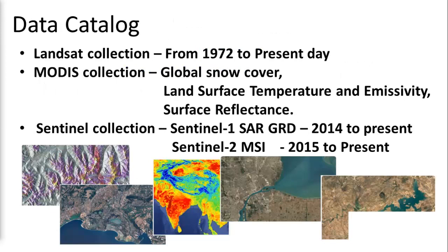As you can see, the data catalog of Google Earth Engine has a variety of collections. The Landsat collection has images from 1972 to the present day, including Landsat 1 through Landsat 8. In the MODIS collection, you can get many image types for calculating or analyzing global snow cover, land surface temperature, and surface reflectance.